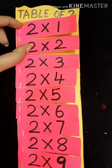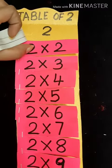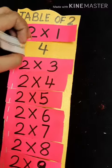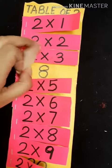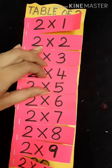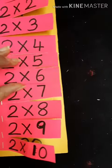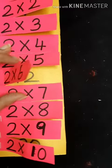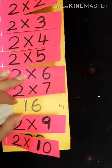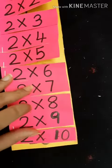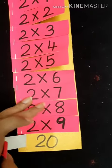So children, let us all revise table of two once again. 2 1s are 2, 2 2s are 4, 2 3s are 6, 2 4s are 8, 2 5s are 10, 2 6s are 12, 2 7s are 14, 2 8s are 16, 2 9s are 18, 2 10s are 20.